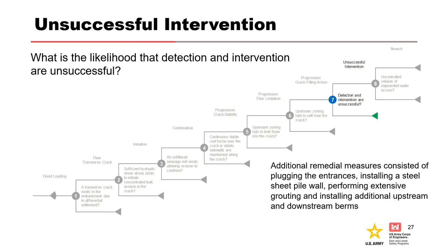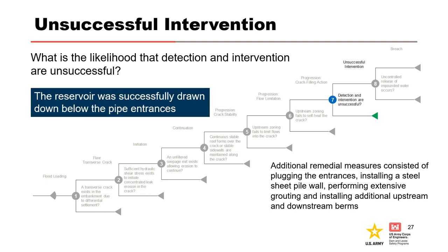Node 7: What is the likelihood that detection and intervention are unsuccessful? Breach was averted only because the reservoir level dropped below the entrance to the pipes. This incident was a near miss with respect to failure. After the reservoir level was lowered, the entrances to the pipes were plugged. Immediate remedial measures consisted of installing a steel sheet pile wall through the closure section of the embankment, performing extensive grouting, and installing additional upstream and downstream berms.